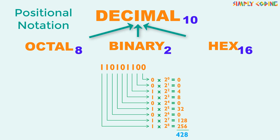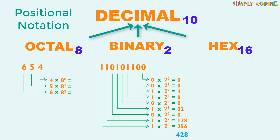We use the same positional notation method to convert octal to decimal. We write down the octal number 654 vertically with the least significant digit first. This time we multiply it with 8 raised to the power of its place value. We multiply each digit with its corresponding weight and then sum it up. The resulting number 428 is the decimal equivalent of the octal number.